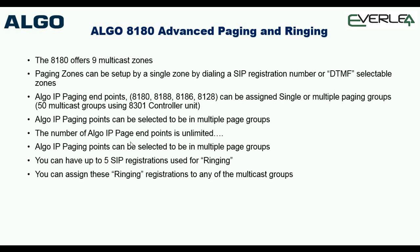The Algo paging endpoints can be the 8180, 8188, 8186, and 8128 — all fundamentally very similar. Once you get your head around what the 8180 can do, the 8186 (which is the bullhorn weatherproof version) is just about identical in how it works.